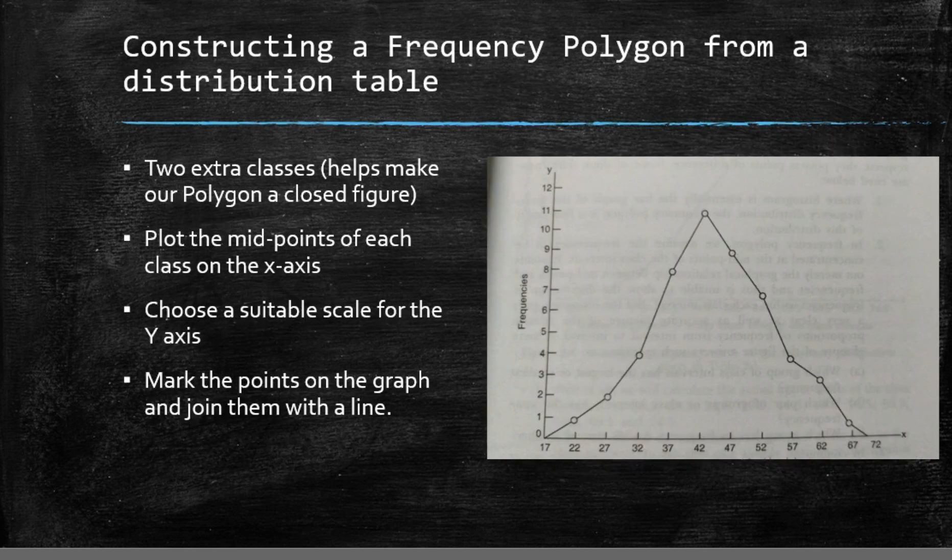Creating a frequency polygon from a frequency distribution table is also easy. First of all, make two extra classes with zero frequencies, one before the lowest class and one after the highest class.